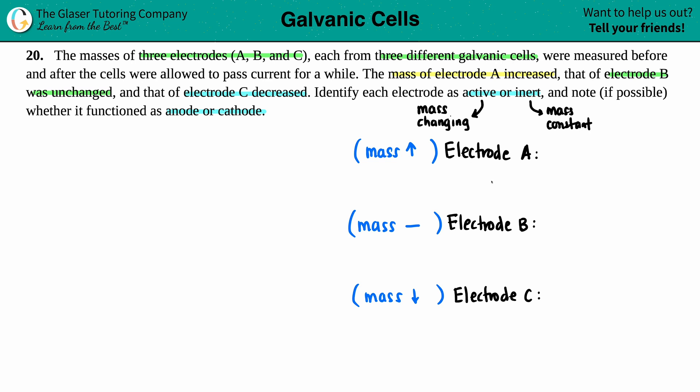So in this case, electrode A, since the mass increased, this was an active electrode. For electrode B, since the mass did not change, it stayed constant, this was inert. And then for electrode C, since that mass decreased, we go back to being an active electrode.